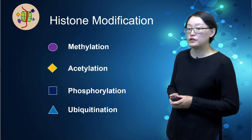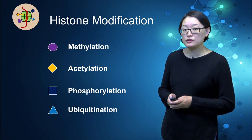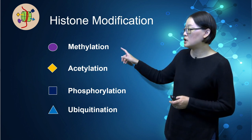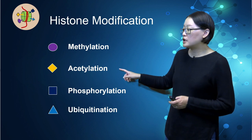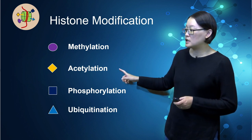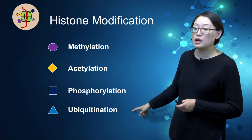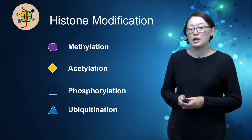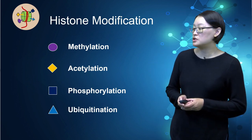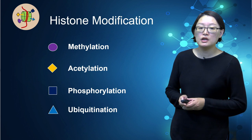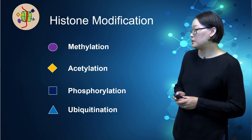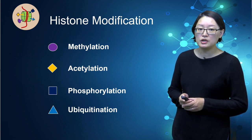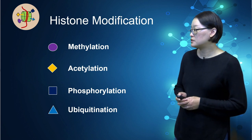Histone modification comes in many types. In addition to methylation, histones can also be modulated by acetylation, phosphorylation, and ubiquitination. These modifications can either repress or activate gene expression depending on what part of the histones are modified and the degree and type of modification.